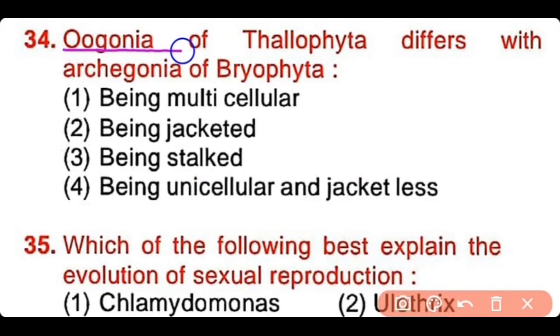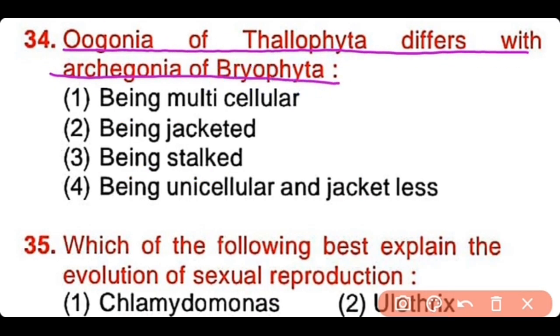Question number 34: Oogamy of thallophytes differs from archegamy of bryophytes by being multicellular, being jacketed, being stalk, or being unicellular and jacketless? The correct answer is option 4.